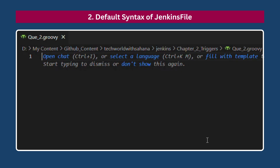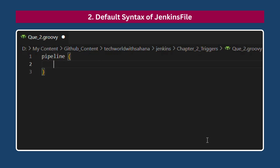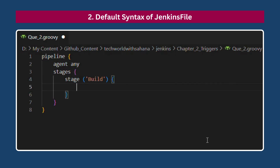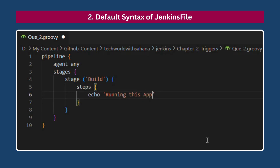Now let's discuss the default syntax of a Jenkins file. It starts with the word 'pipeline', which defines the start of Jenkins' declarative pipeline. 'Agent any' tells Jenkins to run the pipeline on any available agent. 'Stages' starts the block that will contain all the pipeline stages. 'Stage' declares a stage name — like 'build' — in the pipeline; you can name it anything like test or deploy based on your workflow. 'Steps' begins the block containing the steps to execute within that particular stage. For example, an echo statement like 'Building the application' will print that message to the console output. In real workflows, you will use build, test, or deploy commands here.